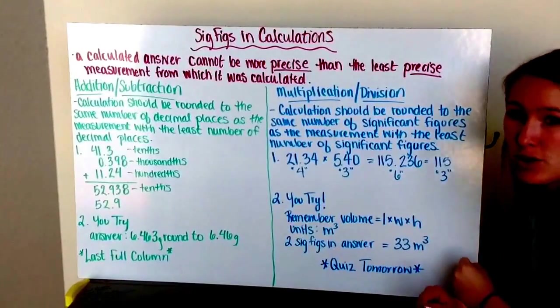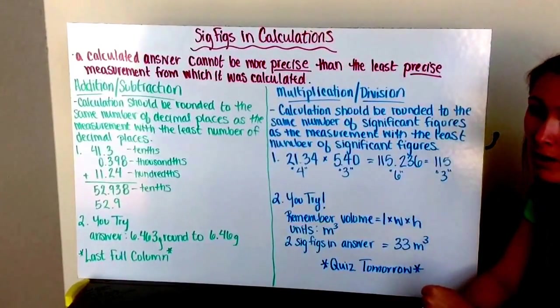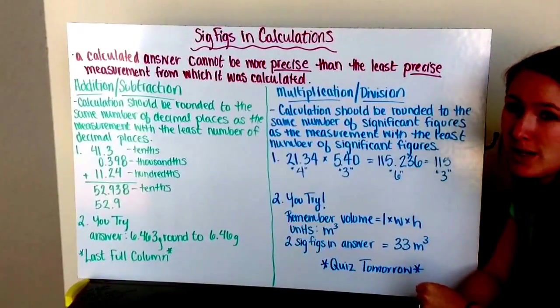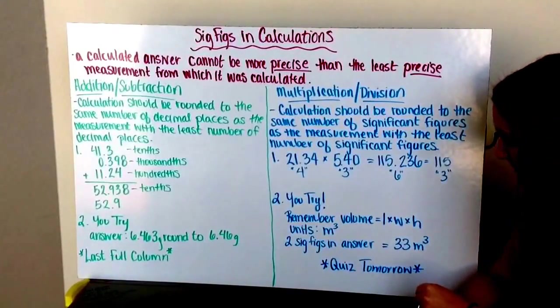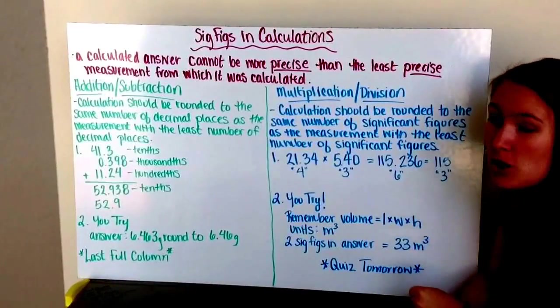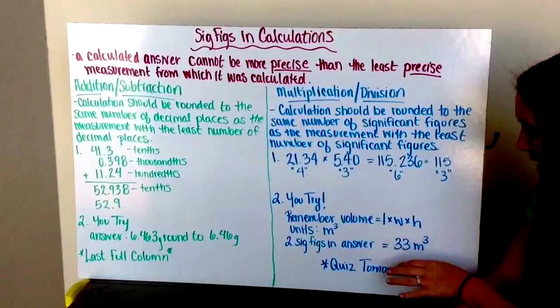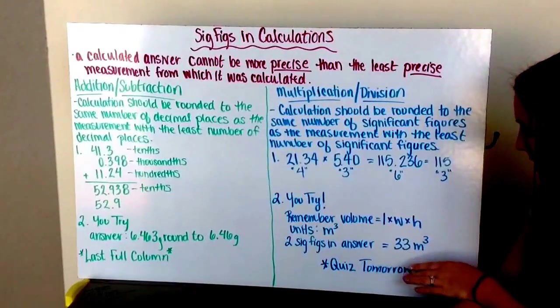Go ahead and try number 2. Remember to calculate volume as length times width times height, and that gives your units on your answer as meters cubed. You should get 2 significant figures as the amount that you can have in your final answer. You should get an answer of 33 meters cubed.